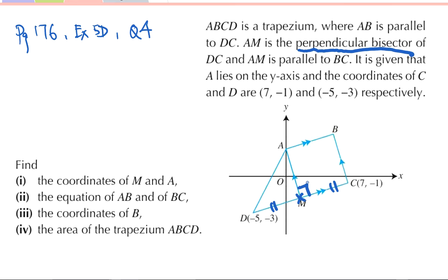AM is parallel to BC. A lies on the y-axis, which means x is equal to 0. And the coordinates of C and D are given respectively. So now do the following four parts together with me and check. Part one: Find the coordinates of M and A.